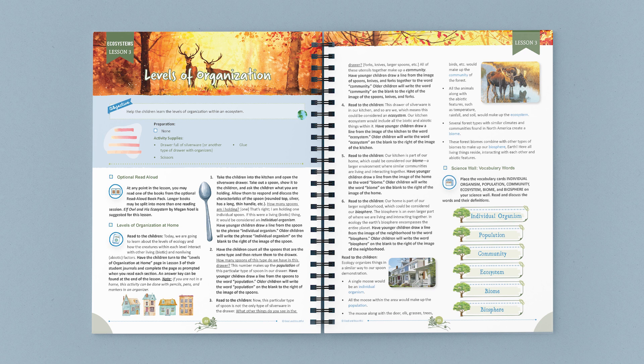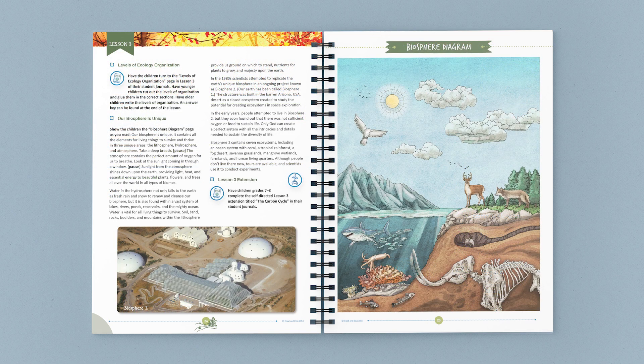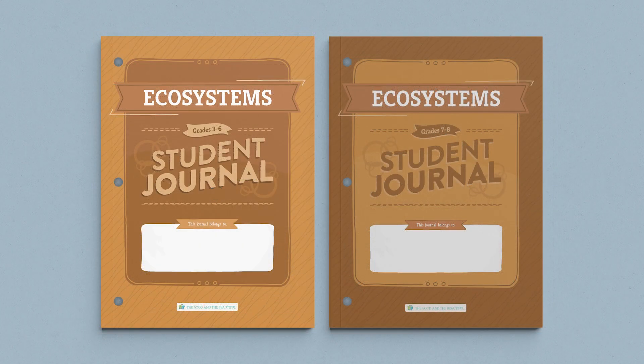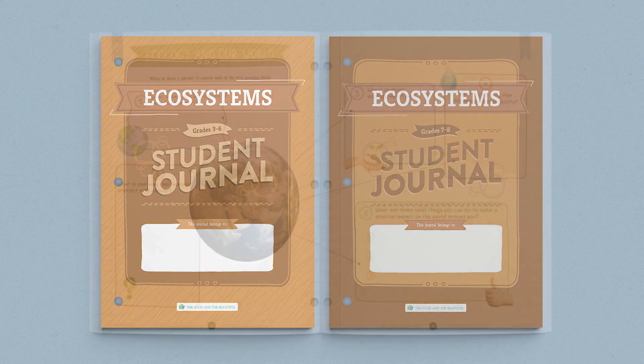All of our science units are taught family style, meaning you only need one coursebook for your family. Each student will also need his or her own student journal. These journals are divided into two age categories: one for grades three through six, and one for grades seven and eight.